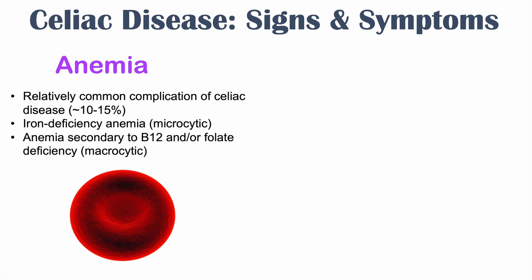Signs and symptoms of anemia include shortness of breath, fatigue, and pallor. In the case of iron deficiency anemia, we can see spoon-shaped nails. With vitamin B12 deficiency, depression and fatigue are seen. It's important to determine which deficiency is causing the anemia.